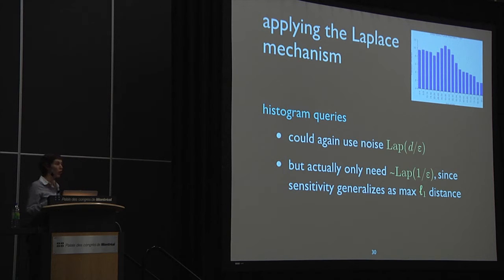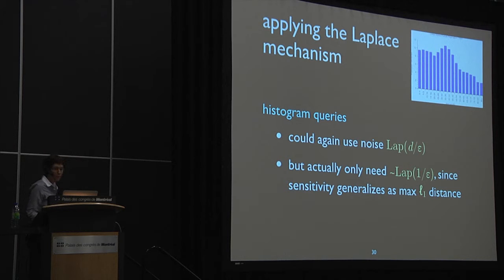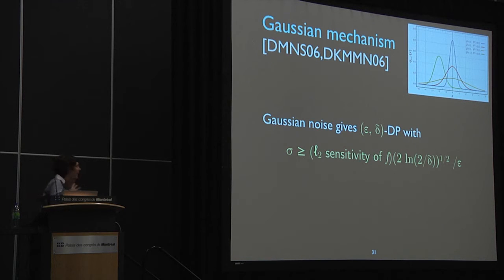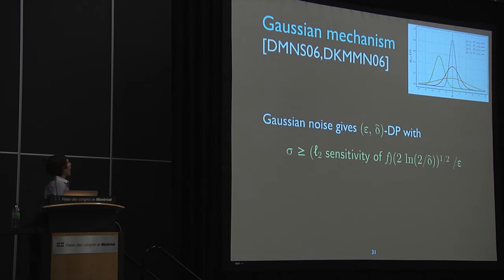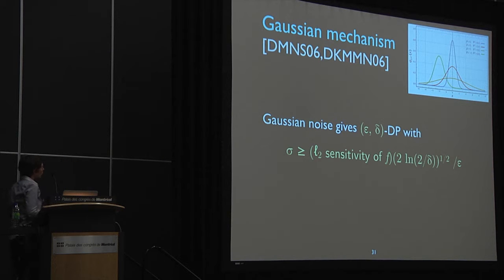Being able to treat queries together and correlate noise starts to look like a powerful tool. You don't need to be wedded to the Laplace distribution — adding Gaussian noise also works, giving an epsilon-delta differential privacy guarantee. Gaussian noise is appealing because it has the same type as other noise sources, and Gaussians added together give Gaussians. For a large number of queries, the cumulative loss under composition is similar for the Gaussian and Laplace mechanisms.